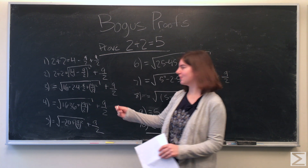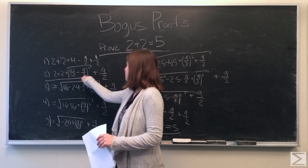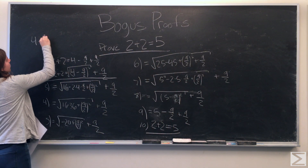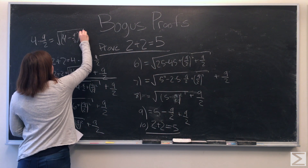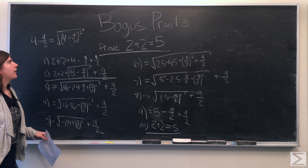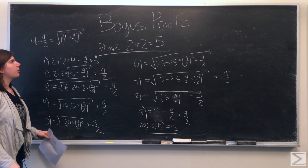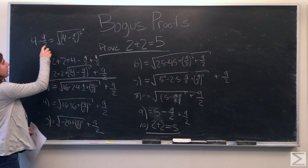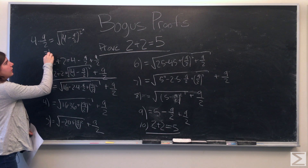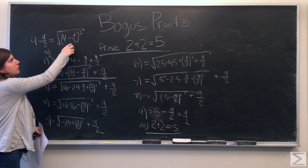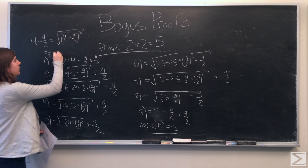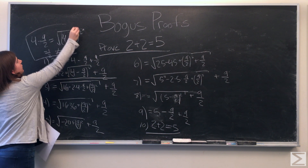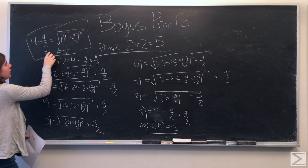The mistake is in line 2. We said that 4 minus 9 halves is equal to the square root of 4 minus 9 halves squared, but we have to remember that 4 minus 9 halves is equal to negative 1 half, and when we take the square root of the square, we're left with a positive 1 half. So these are not equal.